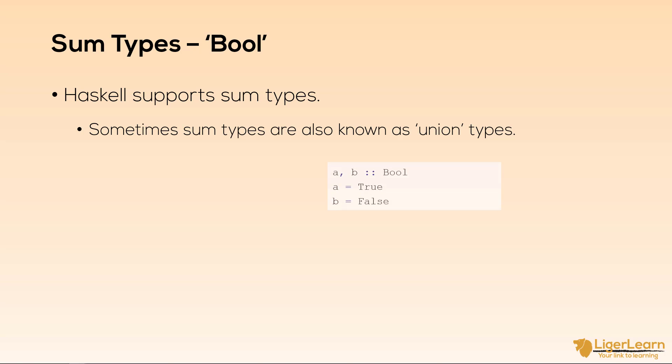We have already seen how we can use the bool type in Haskell. We can declare variables to have the type bool, and then we give our variables either a true or false value. You can't have a half true or half false value. Values can only ever be true or false.